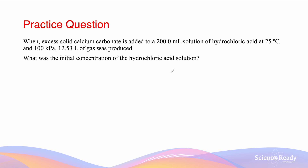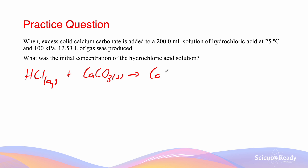This next question reads: when excess solid calcium carbonate is added to a 200 milliliter solution of hydrochloric acid at 25 degrees and 100 kPa, 12.53 liters of gas is produced. What is the initial concentration of the hydrochloric acid solution? We need to identify the gas formed. A carbonate-acid reaction produces carbon dioxide, a salt, and water. Writing the equation: 2HCl + CaCO3 → CaCl2 + H2O + CO2, balanced with a 2 in front of HCl.